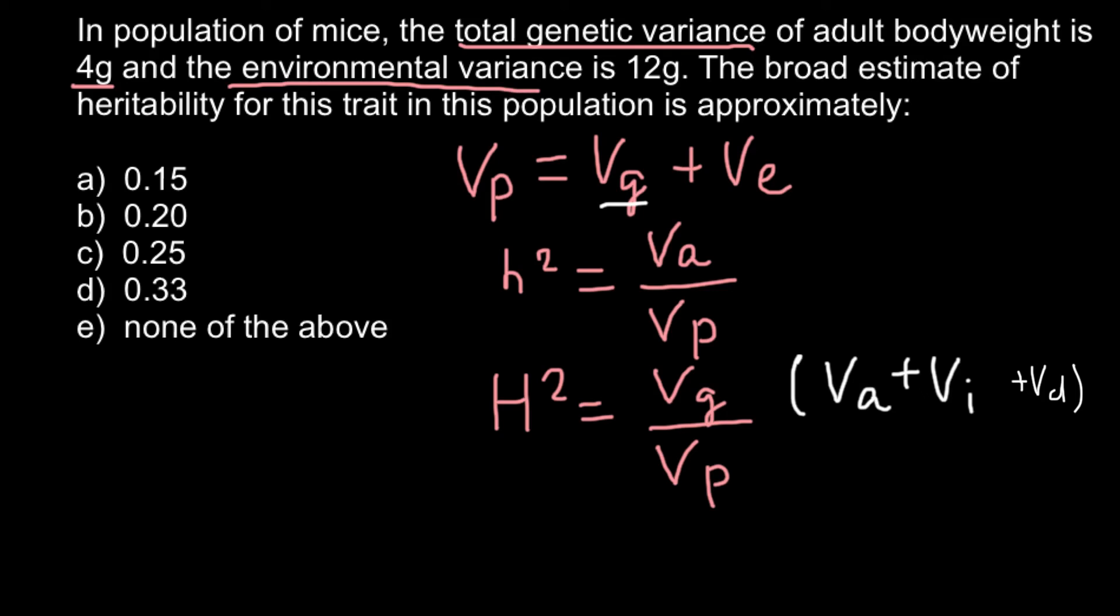This is environmental influence, so we can put 4 grams here and 12 grams here, so total phenotypic variance would be 16 grams.